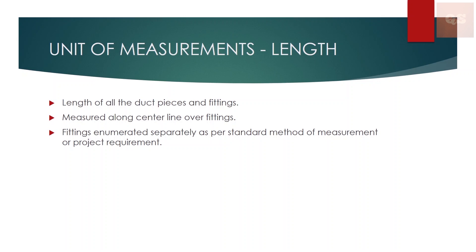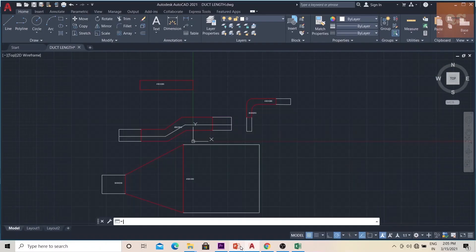If it is required that fittings need to be enumerated separately, only the length of the rectangular pieces are taken and the fittings are separately counted. But if the requirement is that fittings also need to be included within the linear measurement, then the measurement is taken over the center line over the fittings.